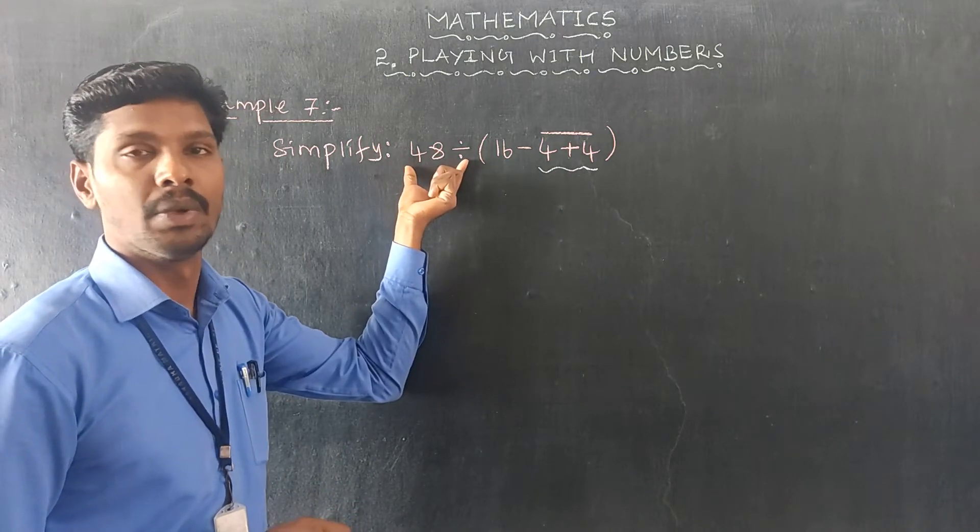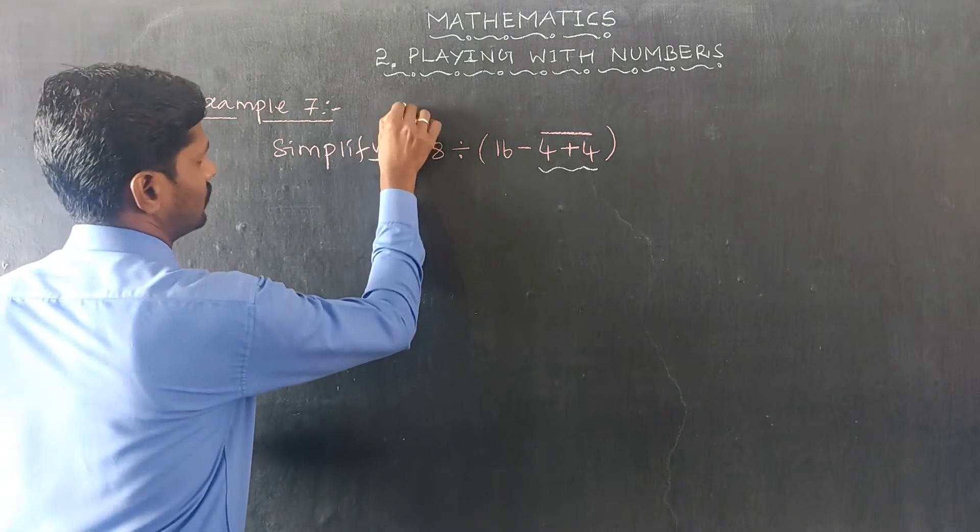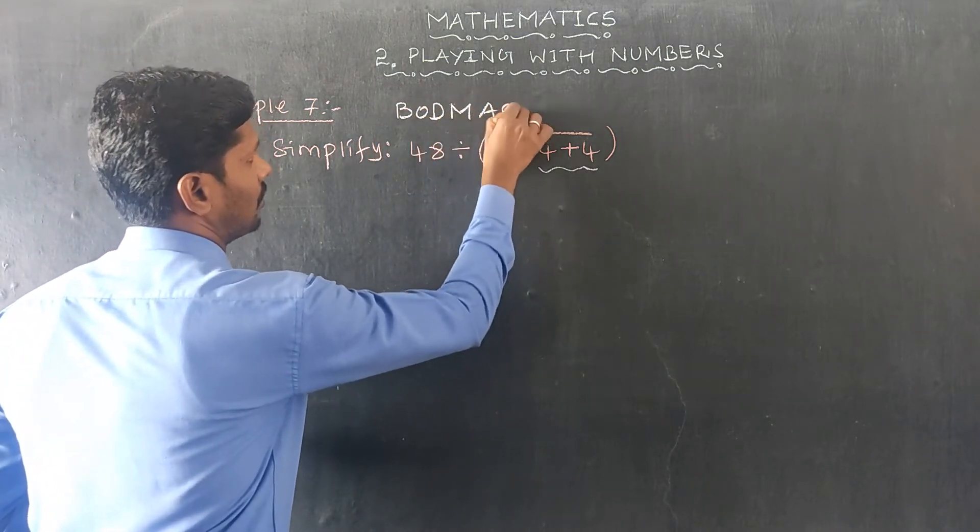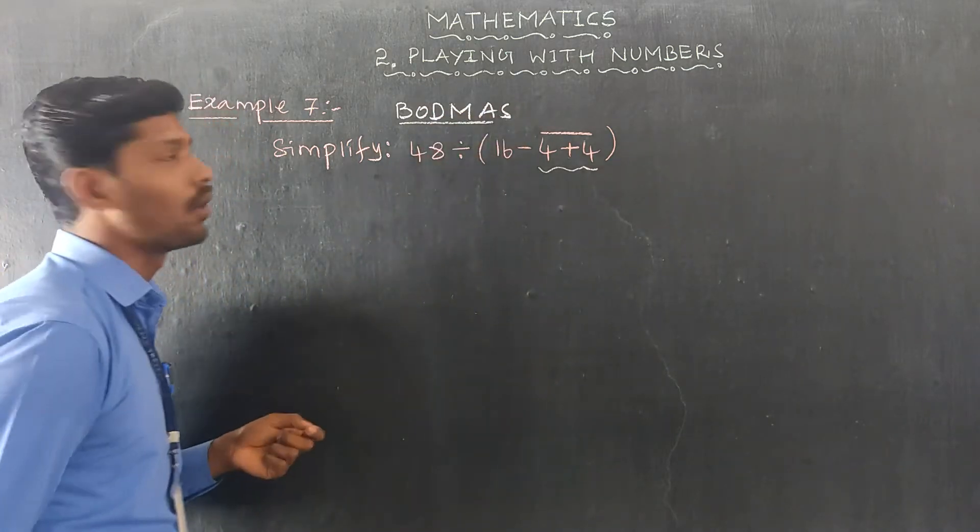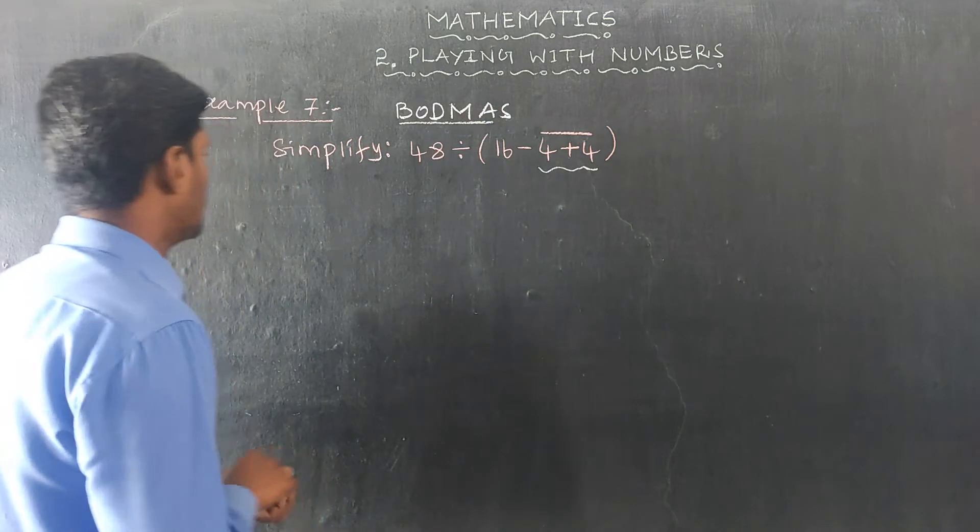Then we can divide by 48 and divide. So what rule is BODMAS? BODMAS means bracket, of, division, multiplication, addition and subtraction solution.